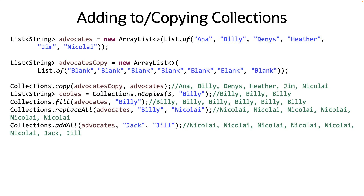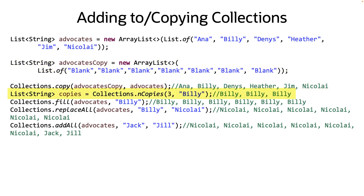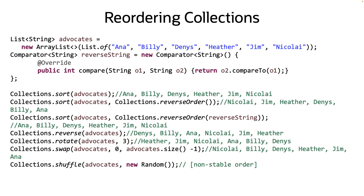Collections provides several options for copying, adding, or replacing values in a collection. Copy will copy the values from the source collection into the target collection. Note that the target collection must be as large or larger than the source collection. nCopies will return an immutable collection containing n copies of the passed in value. Fill will replace every item in the collection with the passed in value. Replace All will replace all instances of the target value with the replacement value. Add All will append to the end of the collection the passed in values.